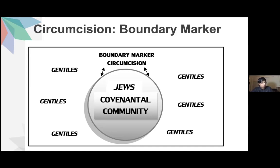Ferguson further says circumcision was the only requirement for foreign proselytes to Judaism according to the written law, and thus it was forcefully administered to the Gentiles who wanted to convert to Judaism. Whoever wanted to be part of the saved community and worship the true God should become part of the Jewish community by accepting the laws and its customs, especially circumcision. For a Gentile, to accept circumcision is to become a part of the saved community. Thus the first requirement to be a saved member of the community is circumcision.